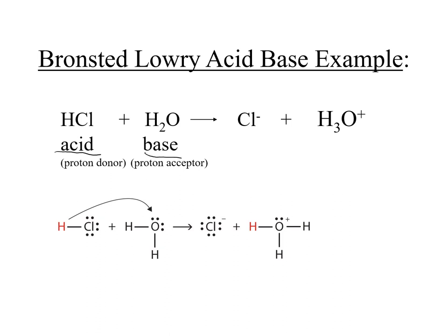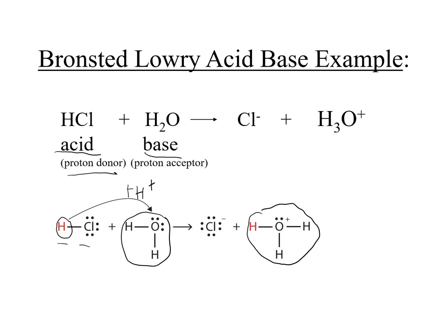A Bronsted-Lowry acid is a proton donor. We have HCl written here, with the hydrogen in red. An acid donates the proton, the H+, to the base. So we're adding an H+ to our water molecule, which is our base. When we do that, we now have three hydrogens. We're adding a hydrogen ion that has a plus one charge, and we end up forming our hydronium ion.